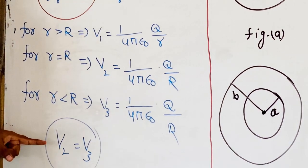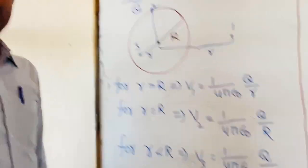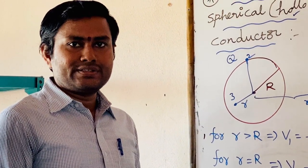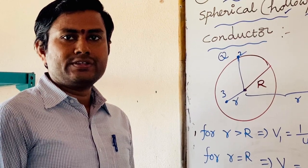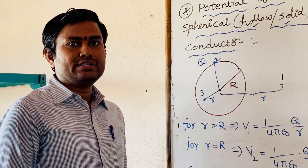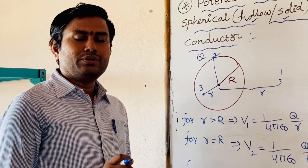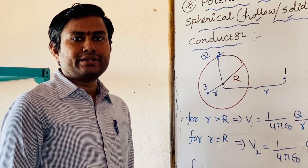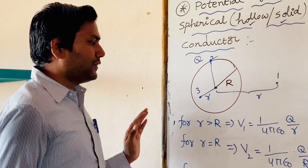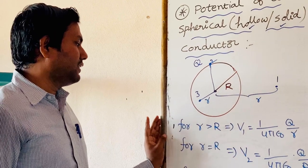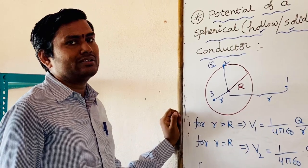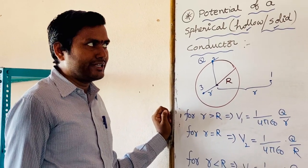So recall this result. What this result says is: whenever you are calculating the potential due to a spherical conductor — either hollow or solid — the potential on the surface of that conductor is always equal to the potential at any point inside the surface. Simply to say, the potential at any point inside the conductor equals the potential on the surface. This is one important result from electrostatics, already covered in the Gauss's Law chapter.